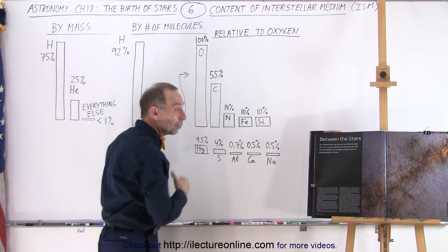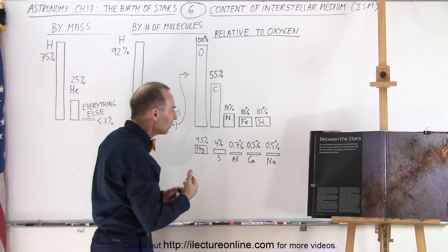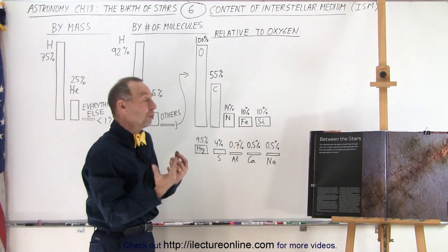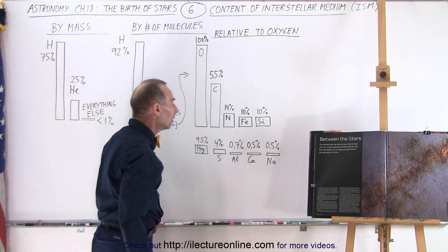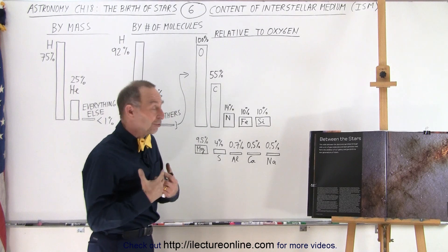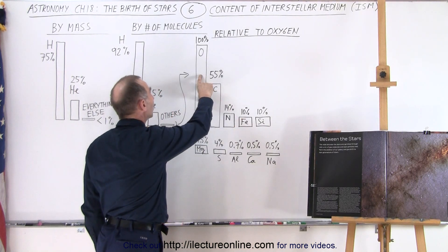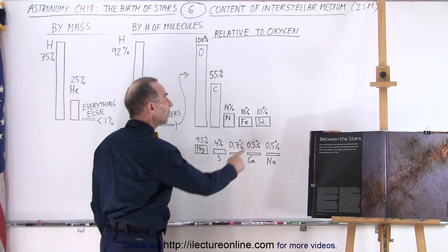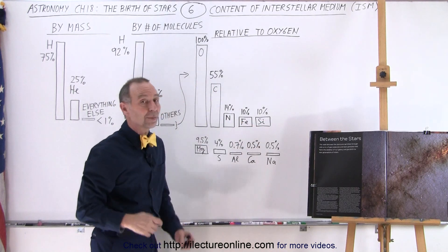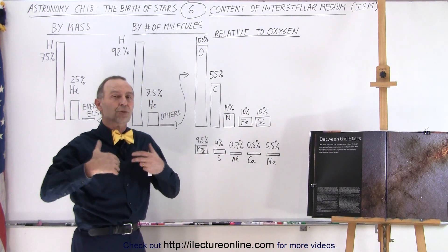And then for the next one, surprisingly enough, it's iron. Of course, when we realize what the reason is why we have supernova explosions, then you realize, yes, iron is a very important element in our universe with a very special function. For every 100 oxygen molecules, there are 10 iron molecules. And there are also 10 silicon molecules. And remember that oxygen mixed with silicon is what makes the crust of the earth.